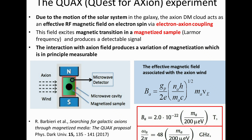Another experiment based on spin resonance — electron spin resonance instead of nuclear spin resonance — is a newly developing experiment called QUACS. The dark matter cloud produces an effective RF field on an electron spin, looking at the coupling to electrons as opposed to nucleons, searching for the axion-electron interaction. This RF field excites a magnetic transition at the Larmor resonance condition, producing a variation of the magnetization that can be detected. The axion wind comes in perpendicular to the applied field; there's a magnetized sample inside a cavity.